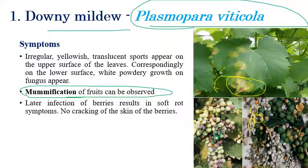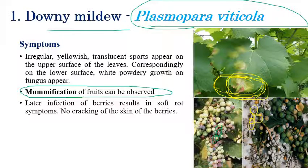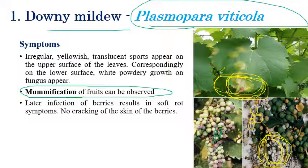White color downy growth or irregular shaped translucent spots can be seen on the upper surface. A white powdery growth can also be seen on leaves and sometimes on fruits as well. If fruits are mummified, it is downy mildew, which is caused by Plasmopara viticola — not to be confused with powdery mildew.